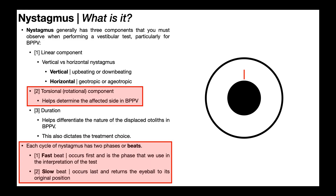The second component of nystagmus is the torsional component, which is just rotation of the eyeball. When we get to the diagnosis of BPPV, this helps determine the affected side — is it the left semicircular canal or the right semicircular canal? When we're interpreting the torsional component, we're specifically using the superior part of the eyeball as a reference point.